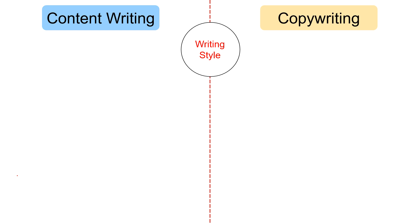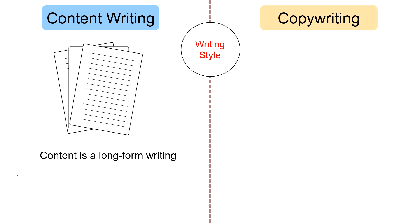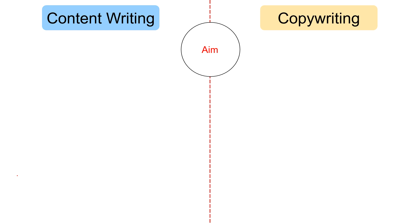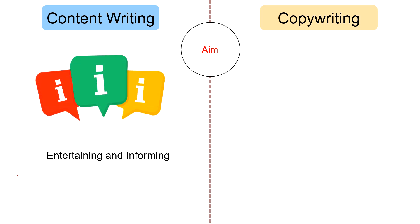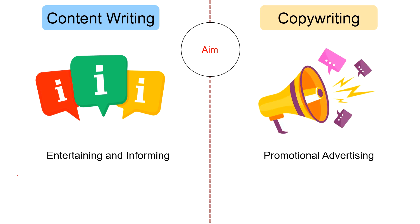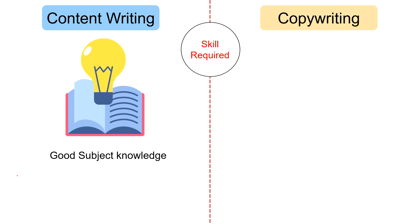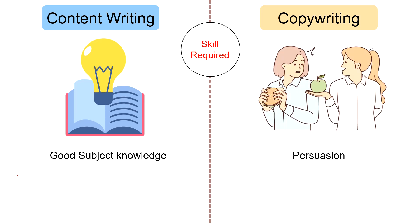Talking about writing style — while content is a long-form writing, copy is a short-form writing. In terms of aim, the aim of content writing is educating and informing, but the aim of copywriting is promotional advertising. Regarding skills, content writers must possess good knowledge of the subject and should be able to perform extensive research. In contrast, the copywriter must be skilled in persuasion, sales and marketing.